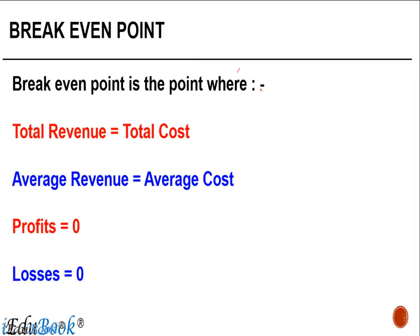A break even point is the point where total revenue equals total cost. Total revenue is the total money received by the producer from the sale of all commodities. Total cost is the entire expenditure incurred to earn that revenue. Equivalently, average revenue equals average cost — that is, total revenue divided by number of units equals total cost divided by number of units. At the break even point, the company has no profits and no losses.